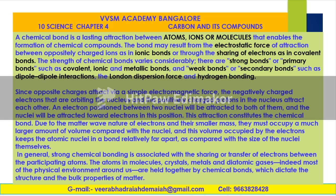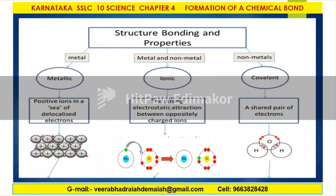This is all about the introduction to the formation of chemical bond. Structure, bonding and properties — there are three types based on the elements involved: metal, metal and non-metal, and non-metals. Metallic bond, ionic bond and covalent bond are the important chemical bonds that we are discussing today.